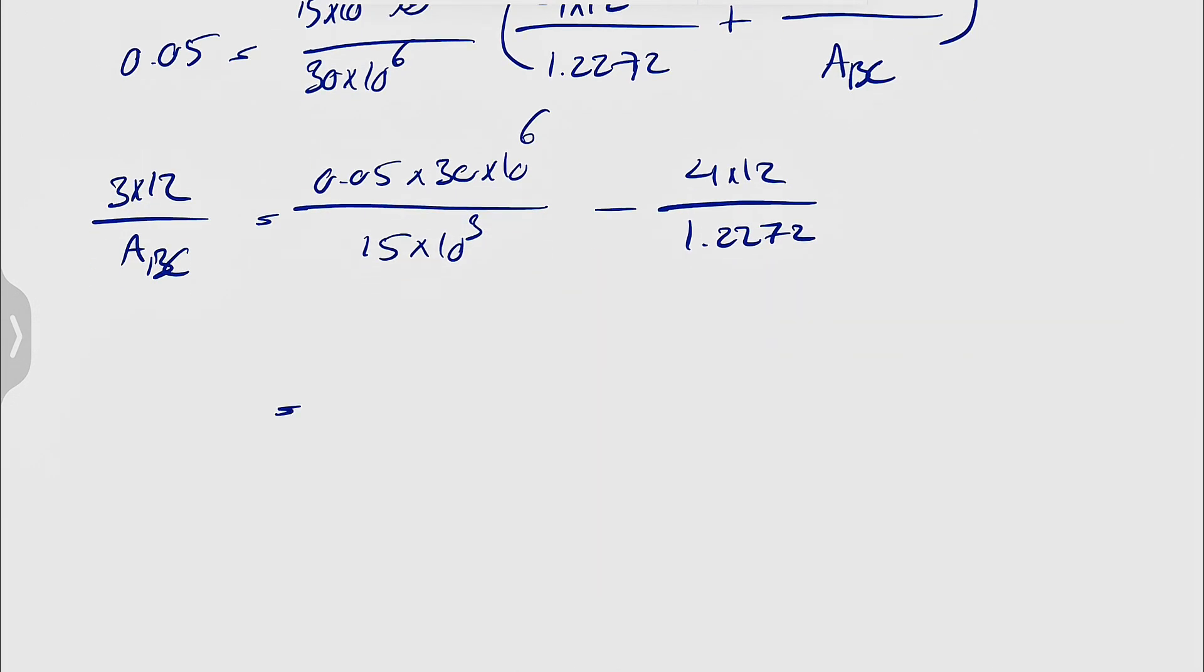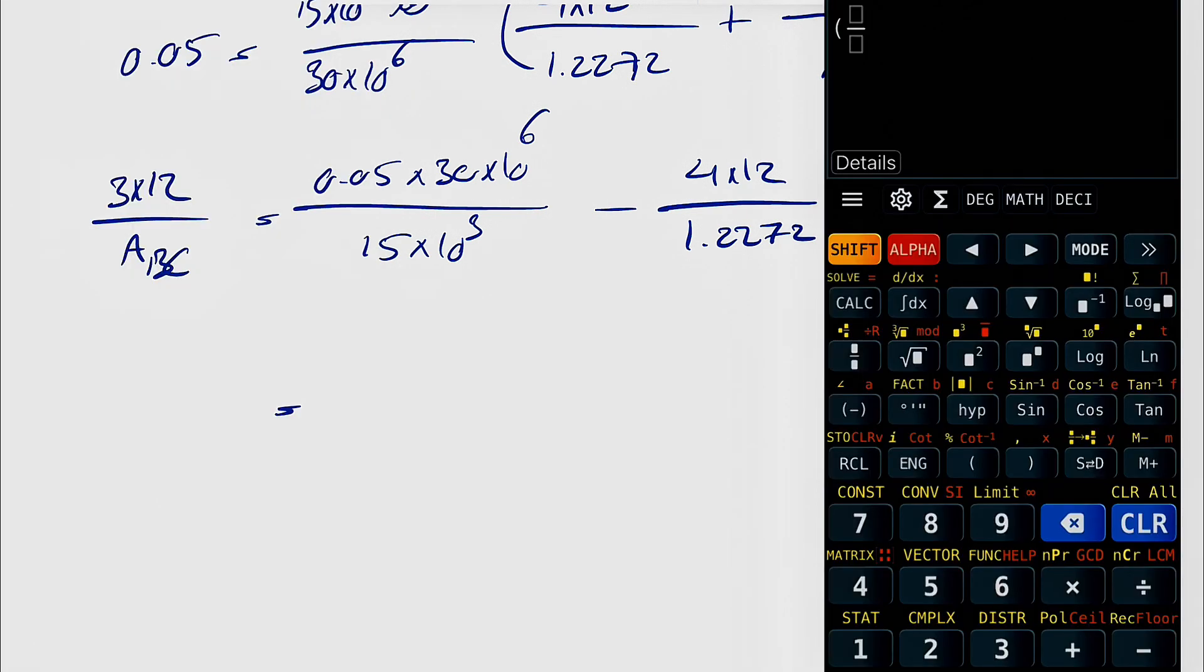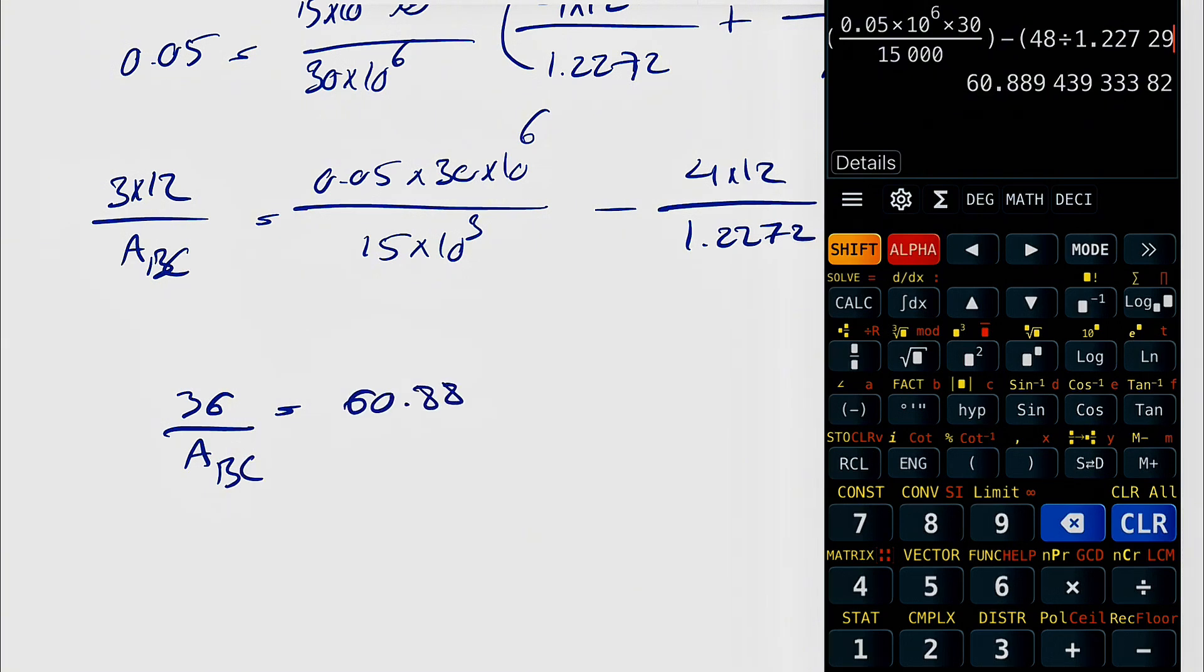So let's just find the right side, and after that it's pretty easy to find the ABC. We're going to have 0.05 times 10 to the 6, times 30, divided by 15,000, minus 48, divided by 1.2272. So 36 over ABC will be equal to 60.8894.